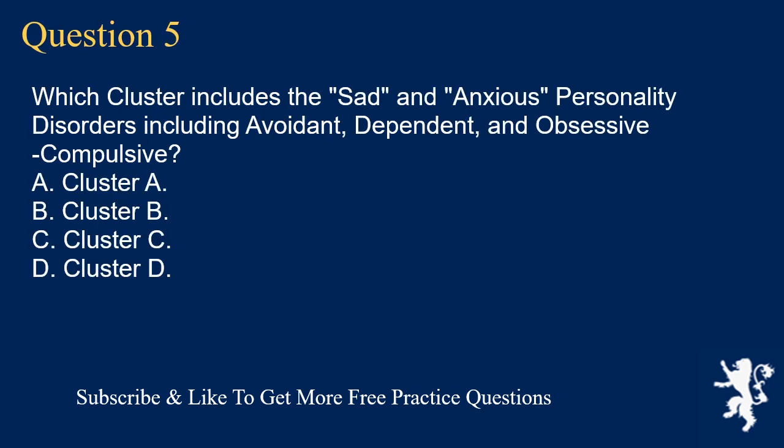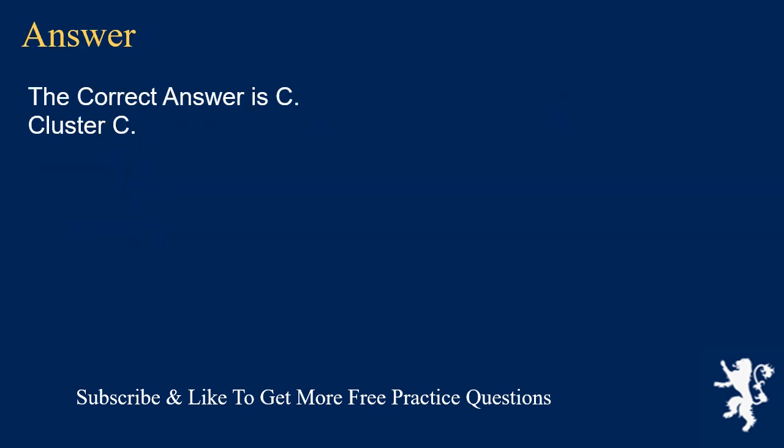Question 5. Which cluster includes the sad and anxious personality disorders including avoidant, dependent, and obsessive-compulsive? A. Cluster A. B. Cluster B. C. Cluster C. D. Cluster D. The correct answer is C. Cluster C.